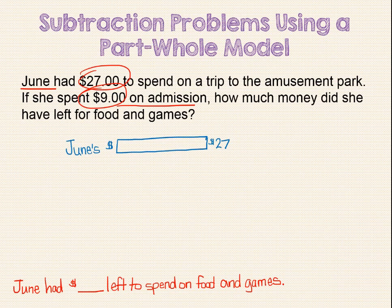We are using a part-whole model because we have a whole of $27 and we are going to find out what part of that whole is left. We are told that she spent $9 on admission, so we can show that by marking off a piece equivalent to $9 and drawing a line through it to show that we are taking it away from the total. We need to find out how much money she has left — that little piece — so that is where our question mark will go.